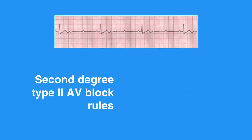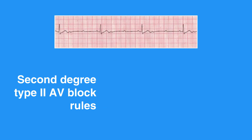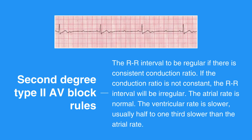Second degree type 2 AV block, or Mobitz 2, rules include the R-R interval to be regular if there is a consistent conduction ratio. If the conduction ratio is not constant, the R-R interval will be irregular. The atrial rate is normal. The ventricular rate is slower, usually half to one-third slower than the atrial rate. P waves are upright and uniform. There is not a QRS following every P wave. The PR interval can only be measured on conducted beats and is usually constant across the strip. It may or may not be longer than a normal PR interval of 0.12 seconds.